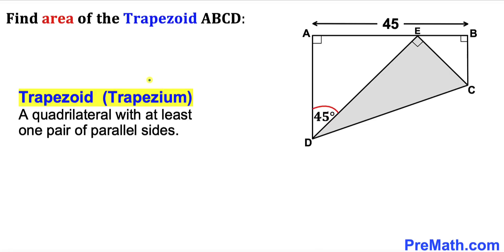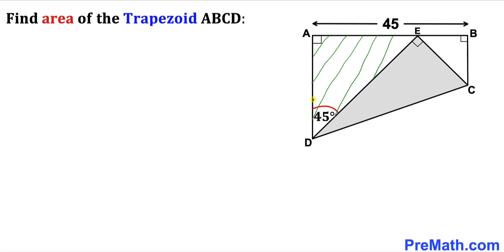Let's recall the trapezoid definition: a quadrilateral with at least one pair of parallel sides. As you can see in this diagram, sides AD and BC are parallel.